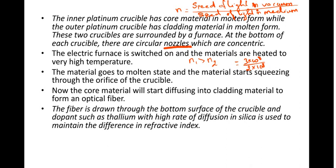The refractive index difference is important — the core material must be very closely matched to the cladding material. The refractive index of the cladding is adjusted using a dopant which is made up of thallium, though other materials can also be used. By doping, the refractive index of that region is changed.